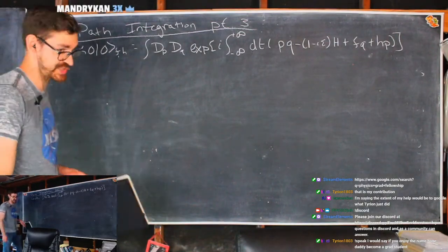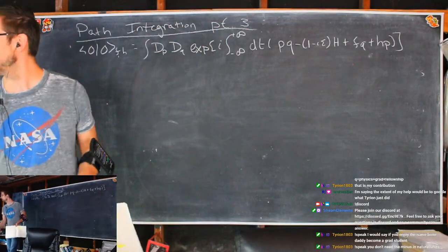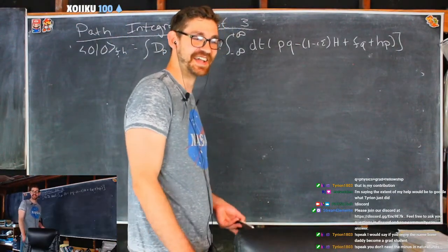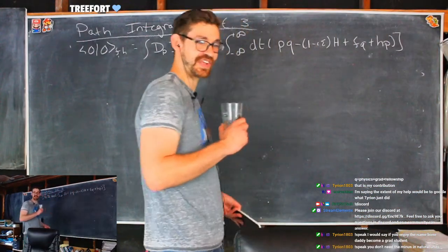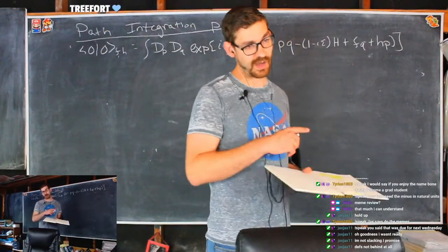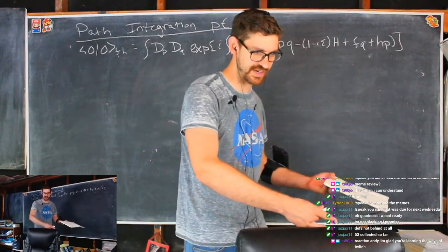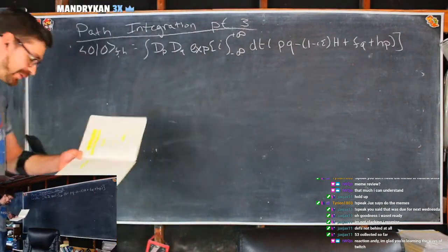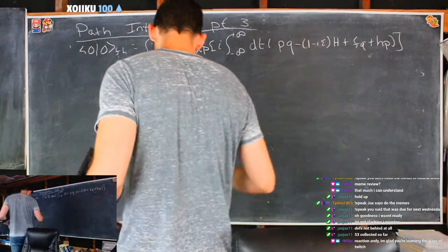Now we are going to use perturbation theory. What is perturbation theory? You take some Hamiltonian and when you apply it to certain states, you get a nice looking eigenfunction — an eigenvalue times the eigenstate. But we know that reality does not act like that.